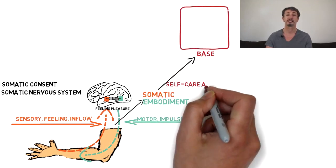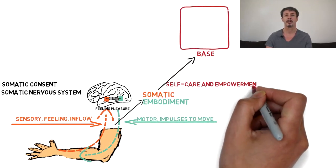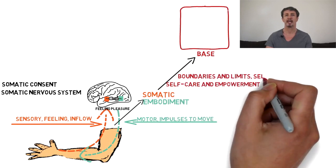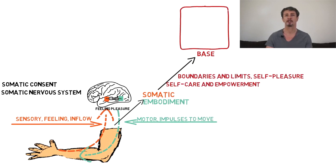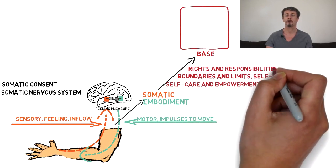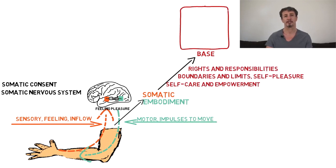It is based on self-love, empowerment, boundaries, limits and self-pleasure, and includes our rights and responsibilities. For this route of transformation, you simply let your skin do the work for you.